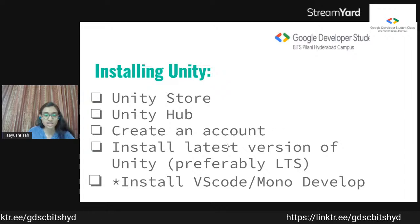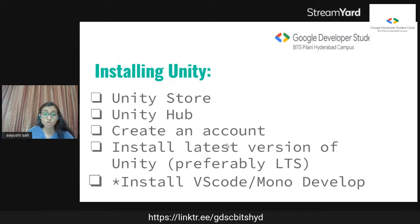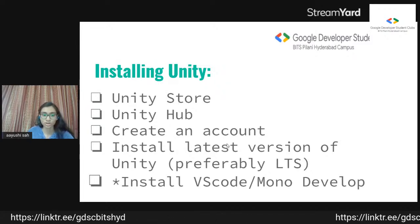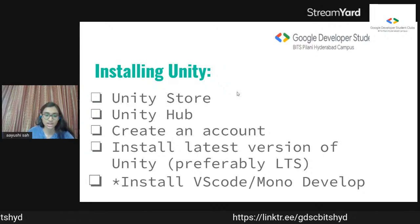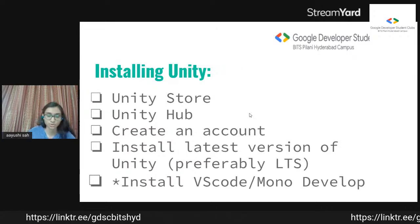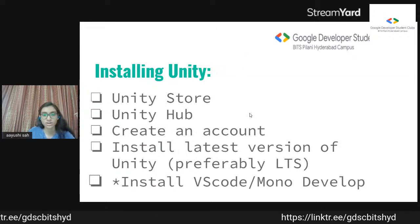Then you install the latest version of Unity and try to go for the LTS version, which is the long-term support version. For scripting, you could install either VS Code or MonoDevelop. Personally I prefer VS Code, but it's up to you.